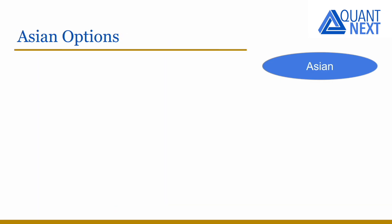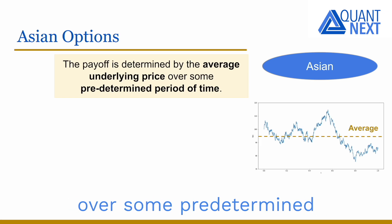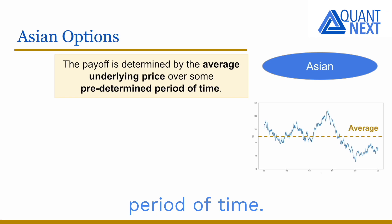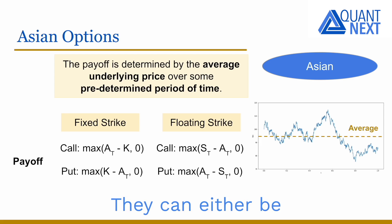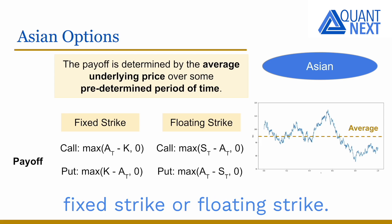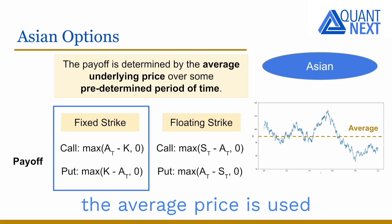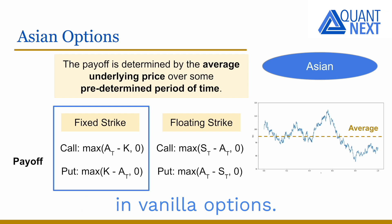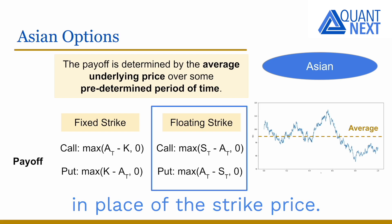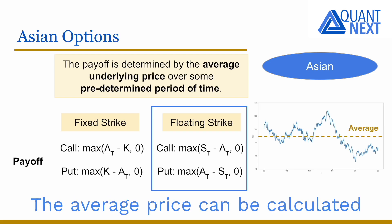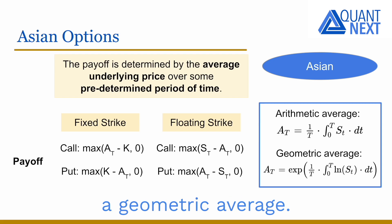For Asian options, the payoff is determined by the average underlying price over some predetermined period of time. There exist two kinds of Asian options: fixed strike or floating strike. They are fixed strike when the average price is used in place of the underlying asset price in vanilla options, while they are floating strike when the average price is used in place of the strike price. The average price can be calculated either via an arithmetic or a geometric average.